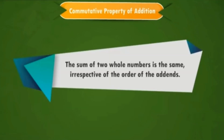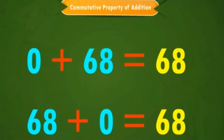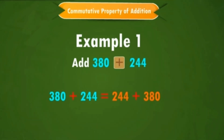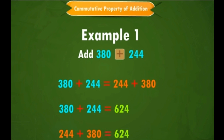The second property is the commutative property of addition. If we add any two whole numbers, the sum will always be the same irrespective of the order of the addends. For example, 380 + 244 should equal 244 + 380. Indeed, 380 + 244 = 624 and 244 + 380 = 624. So even if we change the order of the addends, the sum remains the same.